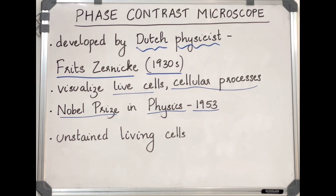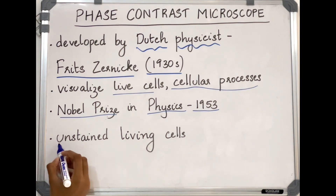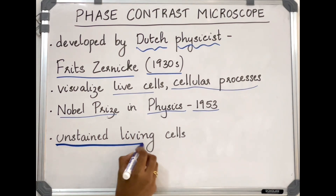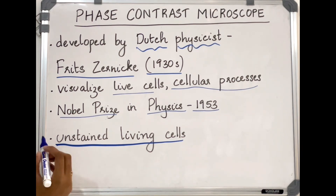Using an ordinary microscope it is very difficult to visualize unstained living cells. We always have to stain the specimen in order to improve the contrast of the image, but most stains and staining procedures can kill or damage the specimen. The phase contrast microscope will allow us to visualize unstained living cells — this is a very important advantage.